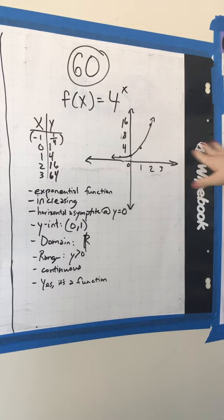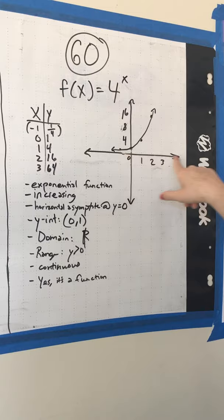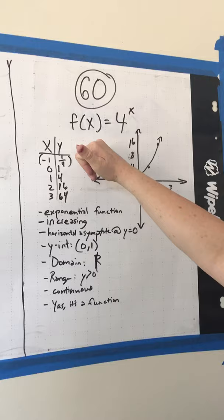And there's also a horizontal asymptote at y equals 0, which I explained earlier. It can never go into the negatives, because even when x is negative, y is just going to be a fraction.